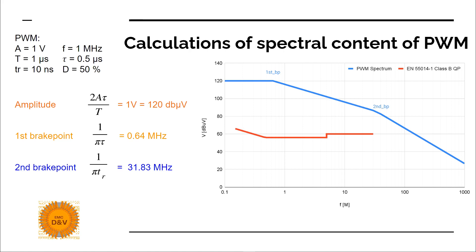If we measured the signal directly without any components in between — just the direct signal, for example from our clock — this would be our spectrum. In reality there are some parasitics and components in between, which is why we need to calculate differential mode noise and common mode noise separately.